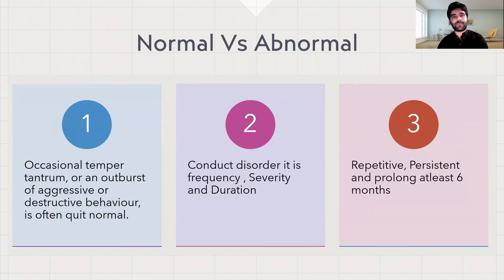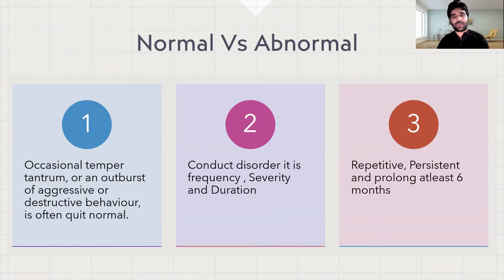As mentioned, Conduct Disorder is a disorder of behavior, and it is very important to differentiate it from normal aggressive outbursts. The occasional temper tantrum or outburst of aggression is normal in young children. But in Conduct Disorder, the aggressive behavior is different in terms of frequency, severity, and duration — it is repetitive, persistent, and prolonged, lasting for at least six months.